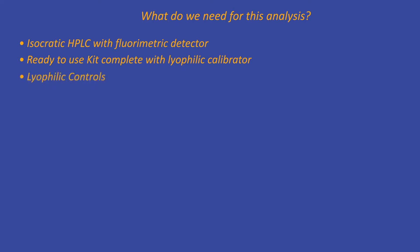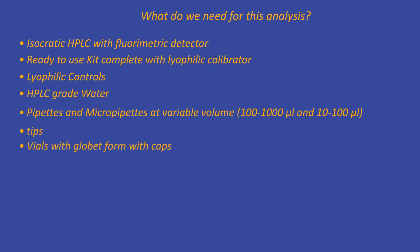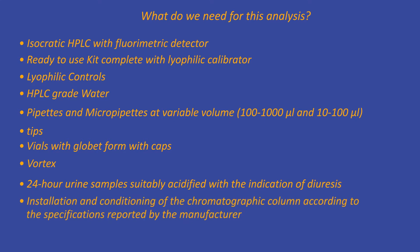Pipettes and micropipettes at various volumes, tips, vials with goblet form with caps, a vortex, 24-hour urine samples suitably acidified with the indication of diuresis, installation and conditioning of the chromatographic column according to the specifications reported by the manufacturer.